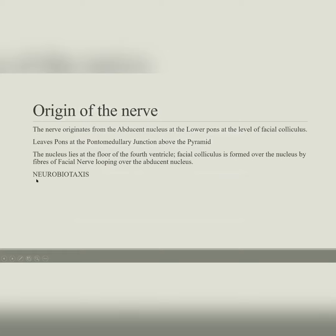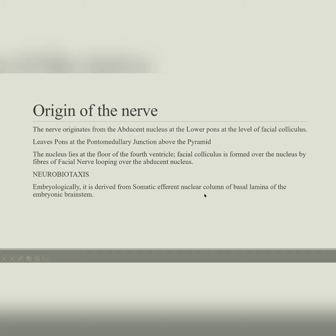The process key to this eccentric course is called neurobiotaxis — as the facial nerve develops, it grows toward the side from which it receives stimuli. 'Bio' means living and 'taxis' means movement. Embryologically, the abducens nerve is derived from the somatic efferent nuclear column, one of the gray areas in the developing embryonic brainstem.